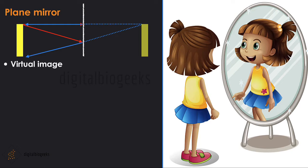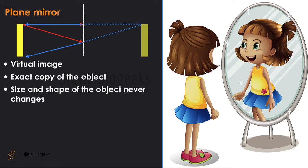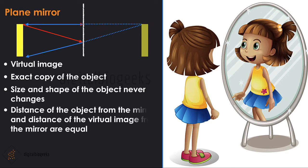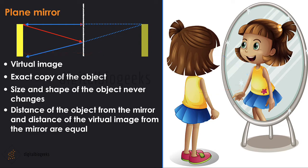Virtual means which does not physically exist. In plane mirrors, the images formed are virtual and appear to be behind the mirror. The image formed on a plane mirror is the exact copy of the object — the size and shape never change. The distance of the object from the mirror equals the distance of the virtual image from the mirror. That is why if we place an object further away from the mirror, the image also seems to be pushed back. The image formed on a plane mirror is always erect.